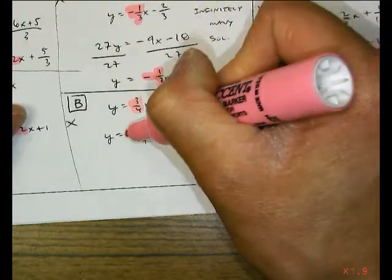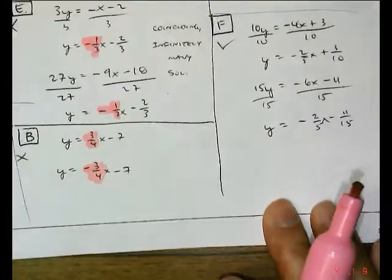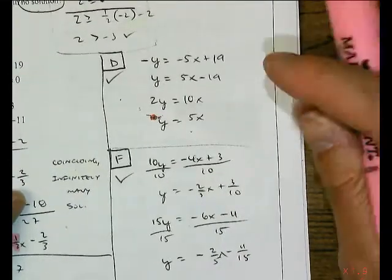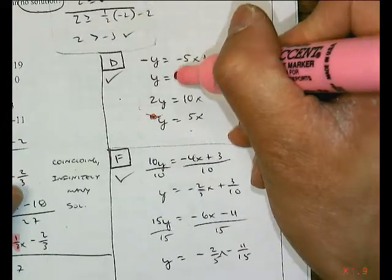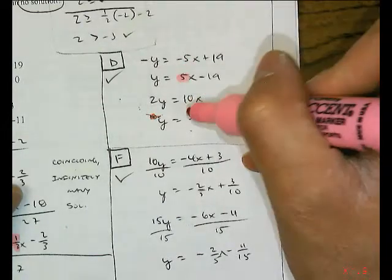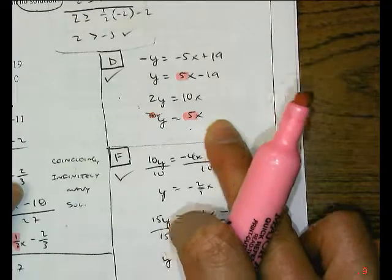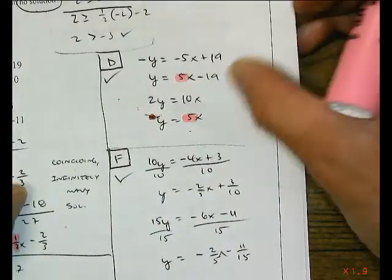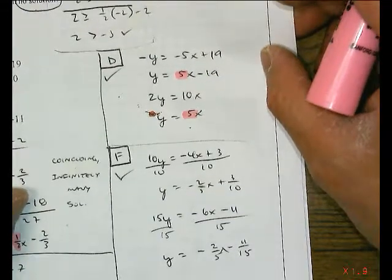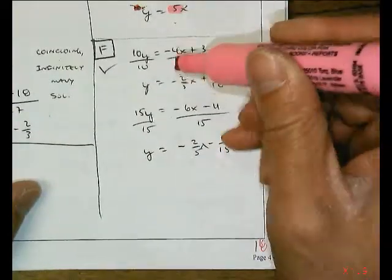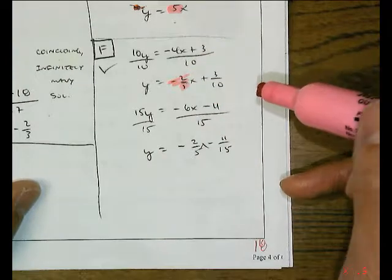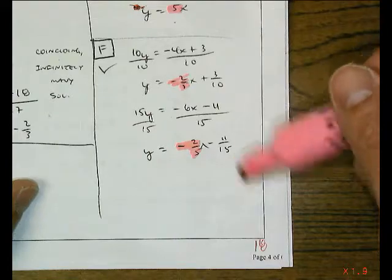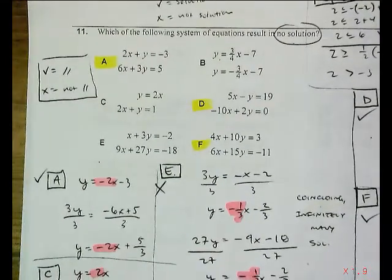B, my slopes are 3 fourths and negative 3 fourths. They are intersecting lines. Notice how you don't even have to graph these to figure that out. D, I have a slope of 5, and I have a slope of 5 here. And I have no Y-intercept, which means plus 0, which means it's going through the origin. So that is parallel lines, that is no solution. I'm going to highlight or circle that. F, I get negative 2 fifths and negative 2 fifths. Remember, parallel lines have different Y-intercepts. So our choices are A, D, and F.